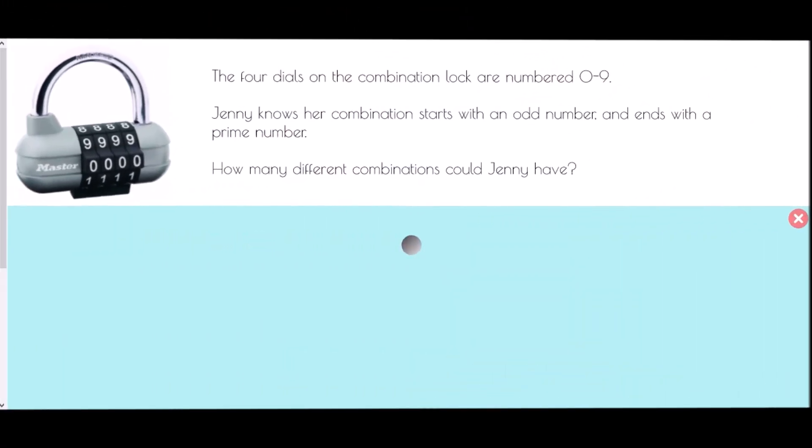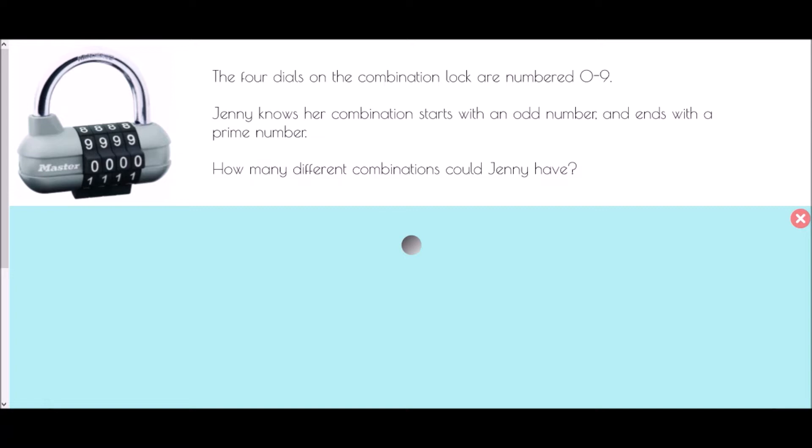Our second example. We have four dials on a combination lock, numbered zero to nine. This may be very similar to the passcode you use for your mobile phone or your pin number for your debit card. Now Jenny knows that her combination starts with an odd number and ends with a prime number. How many different combinations could Jenny have?